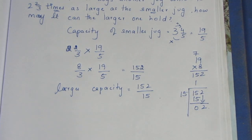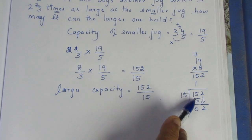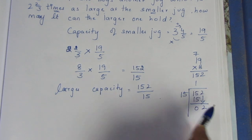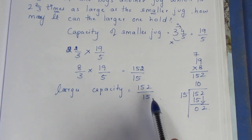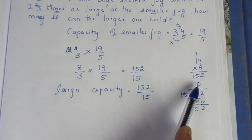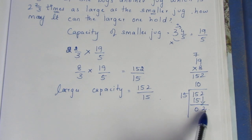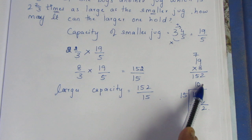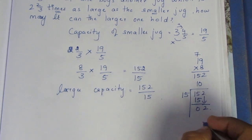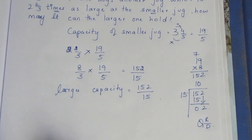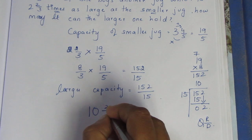To convert the result, we perform division. Adding a decimal point and zeros as needed, we carry out the long division. 15 into 150 gives 10 as the quotient with a remainder of 2. So using the format quotient and remainder by divisor, the quotient is 10 and the remainder is 2, giving us 10 and 2/15 liters.